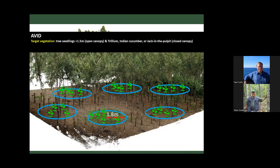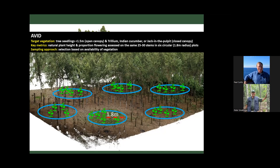With AVID, as we've discussed, we're targeting tree seedlings less than a meter and a half in height, in more open canopy stands. We're targeting three preferred wildflower species in closed canopy stands — trillium, Indian cucumber, and jack-in-the-pulpit. We want to measure natural plant height and proportion flowering on the wildflowers. We assess the same 25 to 30 stems in six circular plots of 1.8 meters or six-foot radius. Selection is based on availability of vegetation and you've got to go where there are openings in the canopy with sufficient stems to measure.